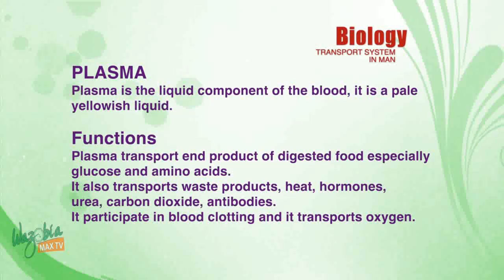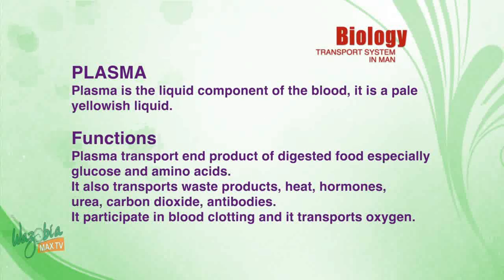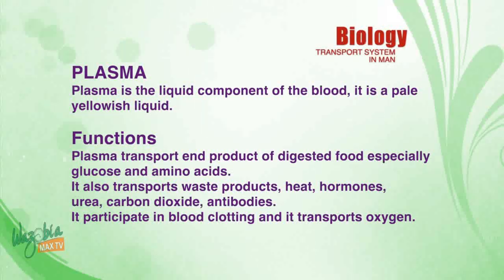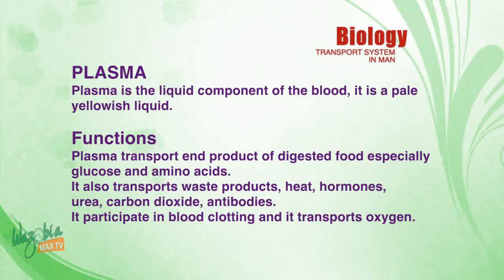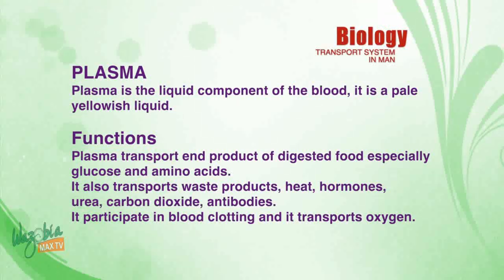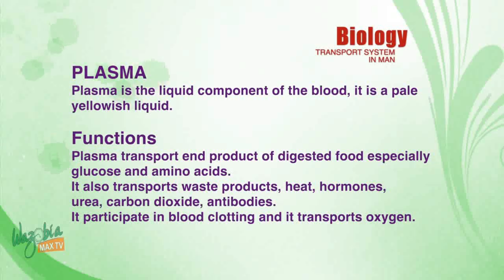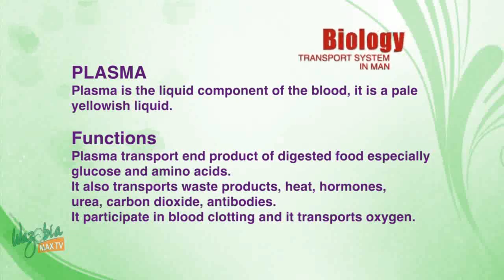Plasma is the liquid component of the blood. It is a pale yellowish liquid. Functions of plasma: it transports end products of digested food, especially glucose and amino acids; it transports waste products; it also participates in blood clotting; and it transports oxygen.